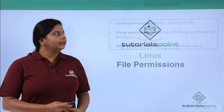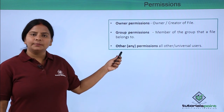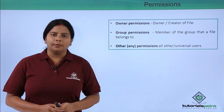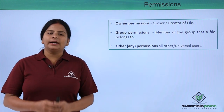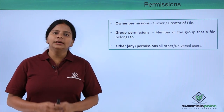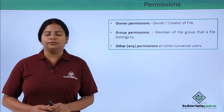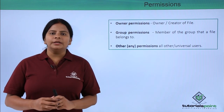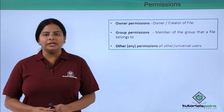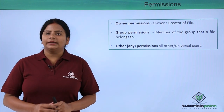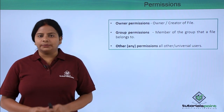Basically, file permissions are of three types. The first is owner permission. When a particular directory or file is created, the user who created it is the owner. We have to set the permission for the owner. The owner has full control permission so that they can create, delete, and modify the existing file or directory.